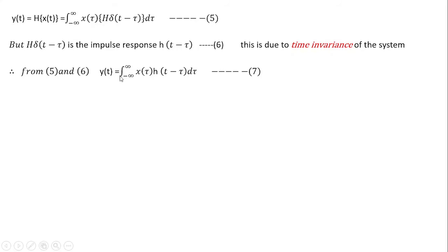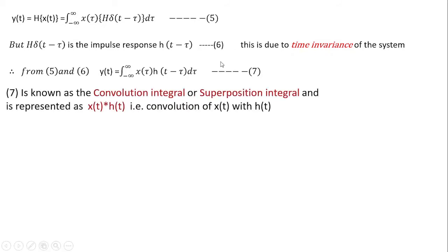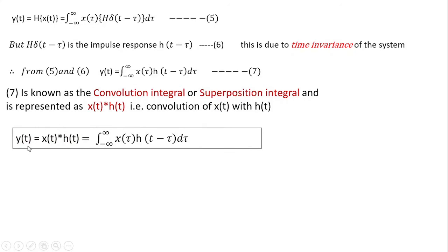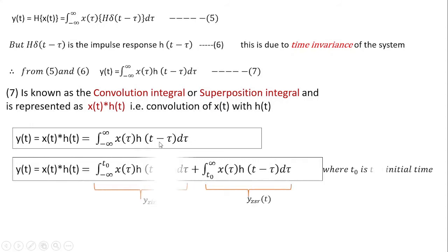Replacing the system operator term by the shifted impulse response h(t − τ), we get the output y(t) as equal to the integral from minus infinity to plus infinity of x(τ) h(t − τ) dτ. This is relation 7, known as the convolution integral or the superposition integral, and it is symbolically represented as x(t) * h(t), read as x(t) convolved with h(t).